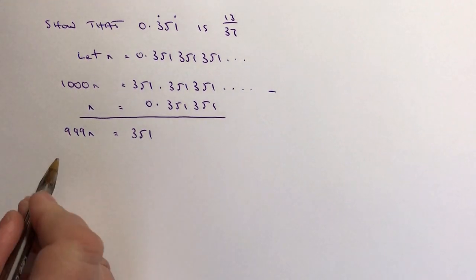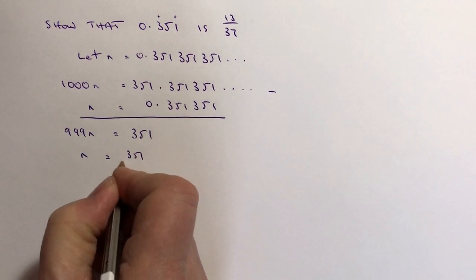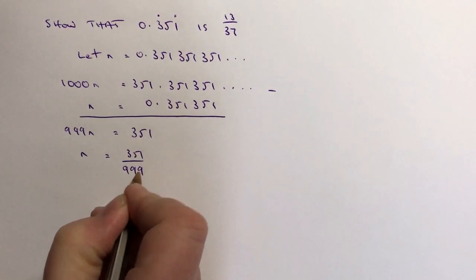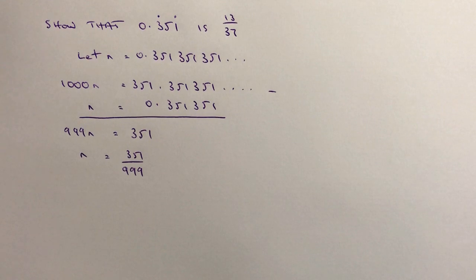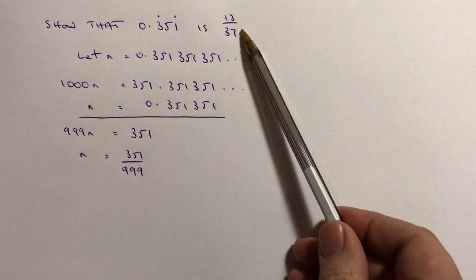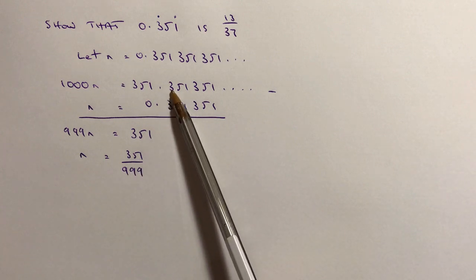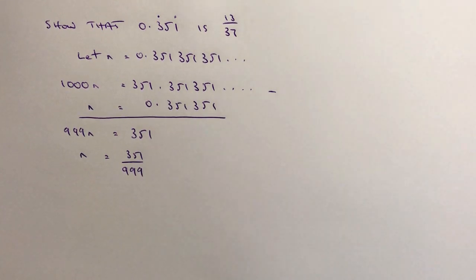If I divide both sides through by 999, I get n equals 351 over 999, which is actually the correct answer. The only difficulty is we need to prove that that fraction is exactly the same as this fraction. This is where this type of question becomes more about your ability to look at equivalent fractions than it is about the method itself.